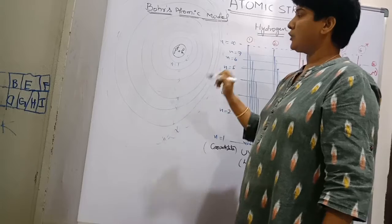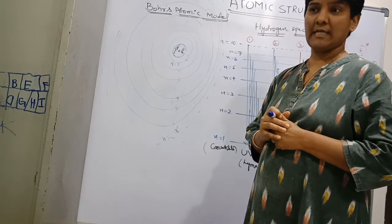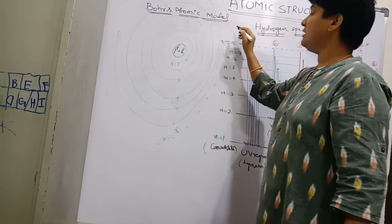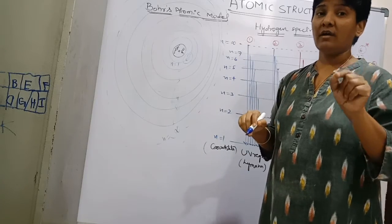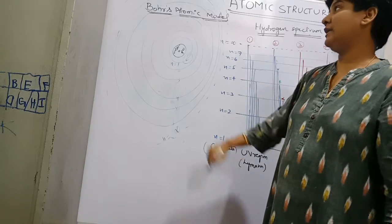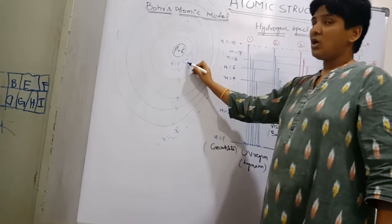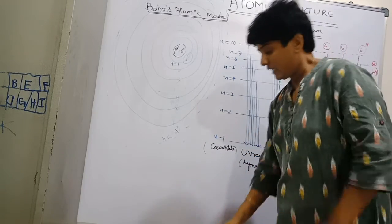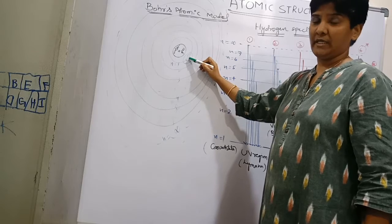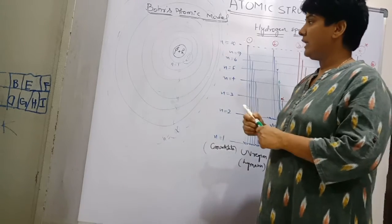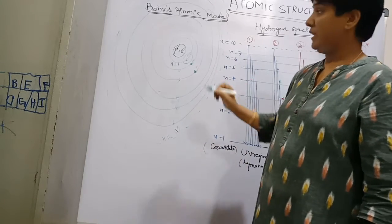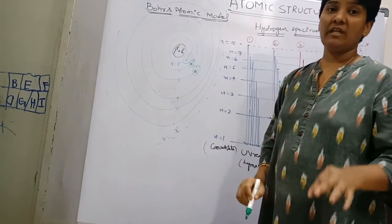The electrons revolve around the nucleus in any of the orbits. Bohr calculated that whenever the electron is revolving in a given orbit, it will have a definite velocity — Bohr proposed a formula to calculate this velocity. As long as the electron revolves in the given orbit, its energy remains constant. If the electron is in the first orbit its energy equals the first orbit energy; if in the second orbit, the second orbit energy; and so on.